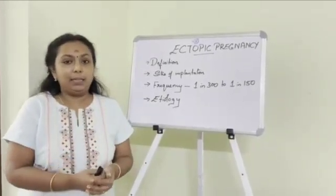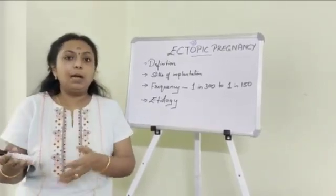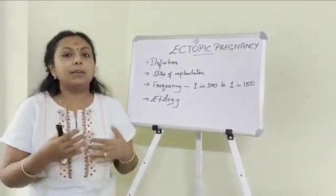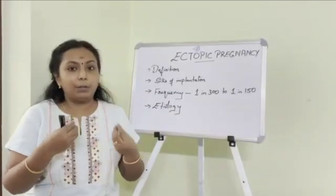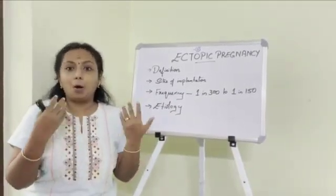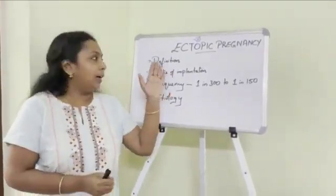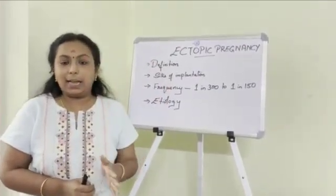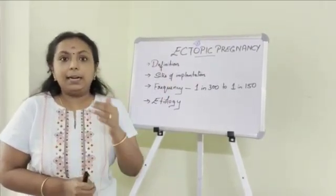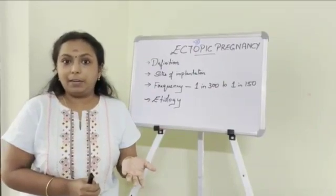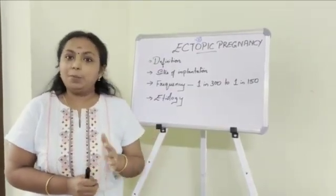But in some cases, the fertilization occurs in the tube, but the implantation may occur somewhere outside the uterine cavity. That is, it doesn't occur in the endometrium of the uterine cavity, but somewhere outside it — and that is what we call ectopic pregnancy. The definition states that in an ectopic pregnancy, the implantation of the fertilized ovum takes place somewhere outside the uterine cavity and not inside it.